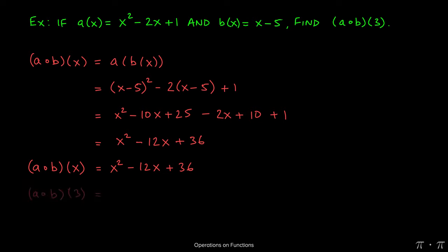Now we needed to evaluate this function at 3. That's what the question asks us to find. So now wherever you see an x in that composition function, replace it with the number 3. So x² becomes 3². -12x becomes -12(3). 36 stays as it is.